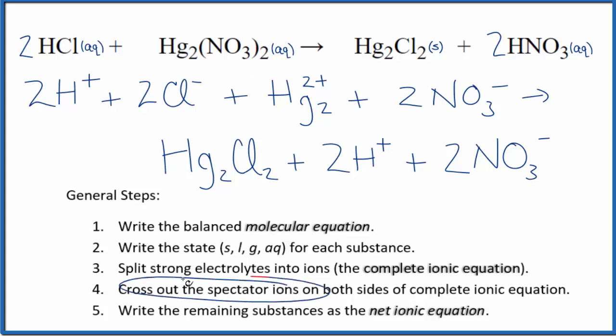Now we can cross out the spectator ions. If we look here, we see two hydrogen ions in the reactants, two in the products. Cross those out.